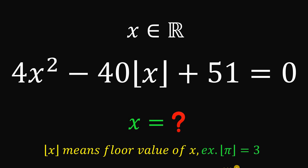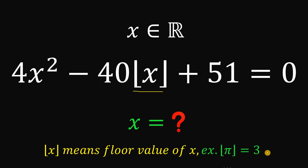Can you solve this math challenge? Here's the question: given the equation 4x squared minus 40 times the floor value of x plus 51 equals 0, this is a complex quadratic equation where x is a real number. The floor value symbol means the greatest integer less than or equal to x. For example, the floor value of pi (3.14) is simply 3. The question is: what are the values of x that satisfy this equation?